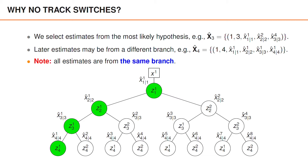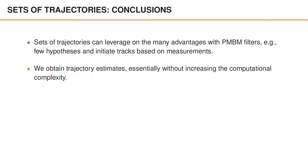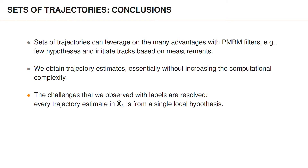Please note that this happens even if we are not using smoothing to improve the state estimates at earlier times. When we start using sets of trajectories, we can build on the things that we have learned earlier in this course. For instance, we can leverage the PMBM filters and the advantages that the PMBM conjugate priors give us, such as relatively few hypotheses and the ability to initiate tracks from measurements in a model-based manner. Sets of trajectories enable us to extract trajectory estimates in a simple manner and without increasing the computational complexity significantly. We have also illustrated that most of the challenges observed when using labeled tracking algorithms were resolved. One simple reason for this is that every trajectory estimate in our estimate x̂ of the set of trajectories is selected from a single local hypothesis.